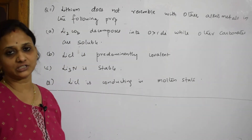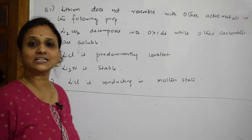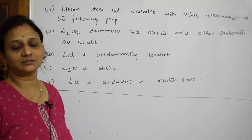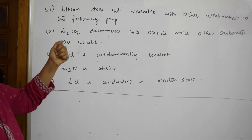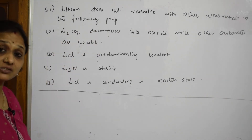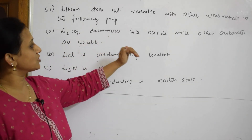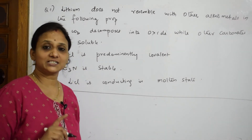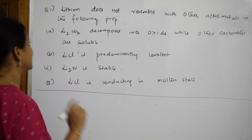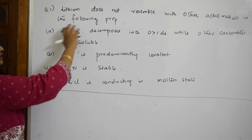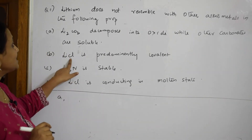Now let us look at a question: 'Lithium does not resemble other alkali metals in which of the following properties?' Option A: Li₂CO₃ decomposes into oxide and CO₂ while other alkali metal carbonates are stable — this is correct, lithium is different. Option B: LiCl is predominantly covalent in nature — correct, this is also a dissimilarity.